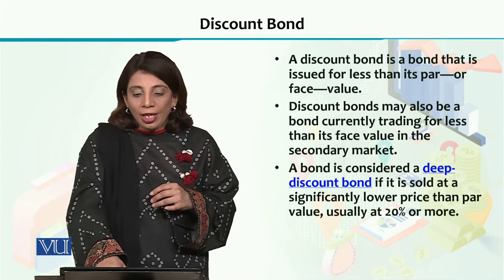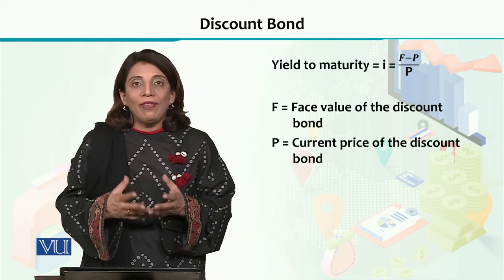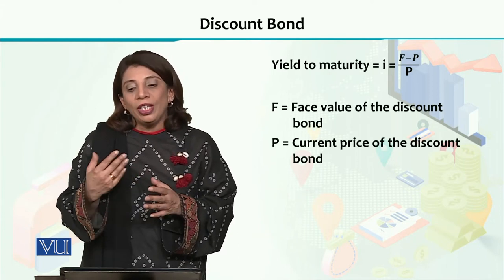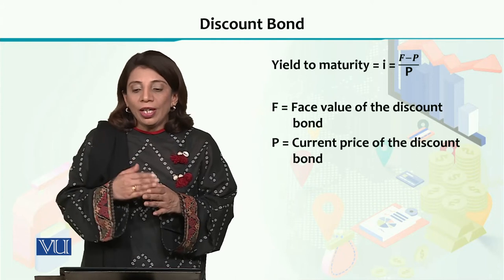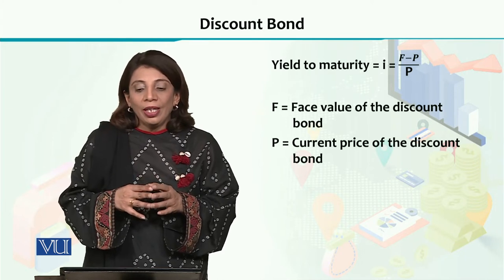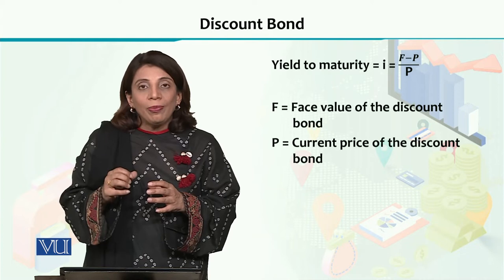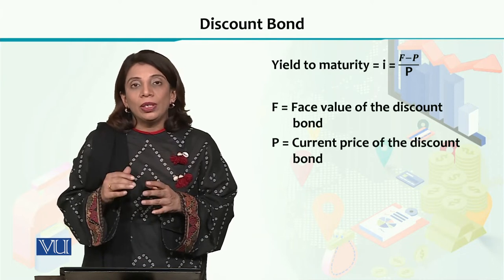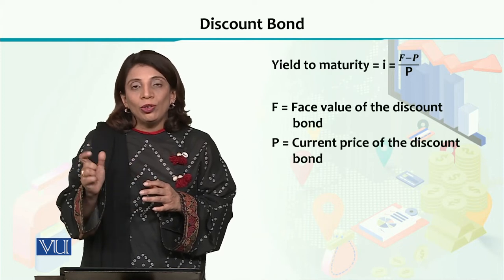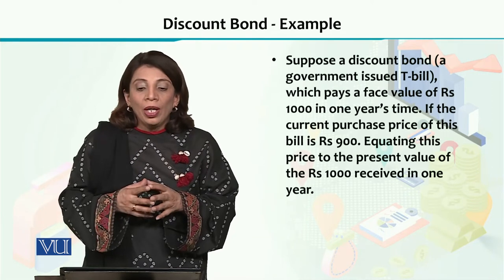जब हम discount bond खरीदते हैं, तो उसमें investor को क्या फाइदा पहुंचता है, उसको क्या advantage मिलेगी, उसका yield to maturity कैसे calculate होगा। इस context में हम yield to maturity को calculate करने के वास्ते formula इस्तमाल करते हैं: face value of the discount bond को current market price से divide कर देना है, और उस difference को current price से divide करने पर आपके पास yield to maturity आएगा।